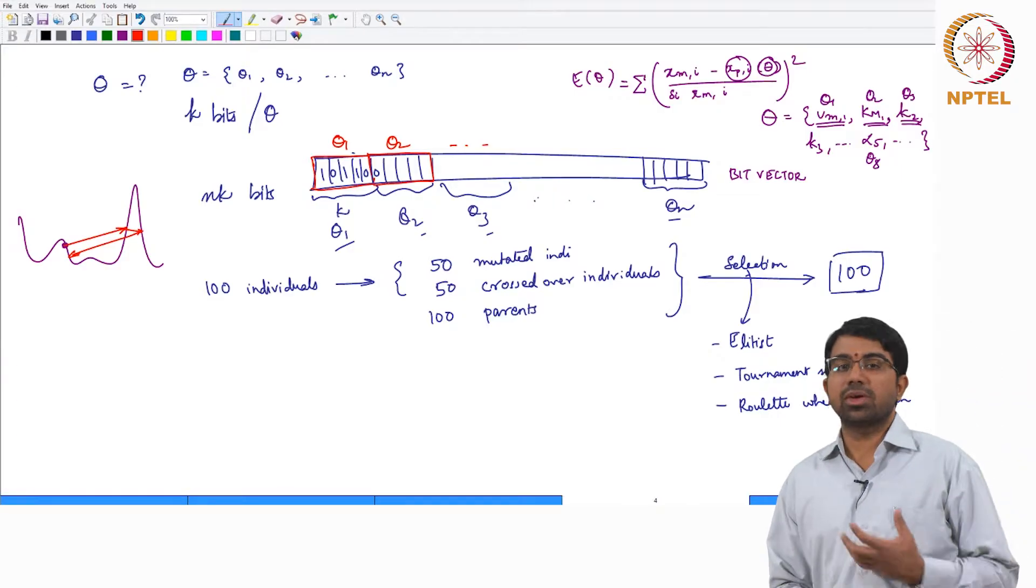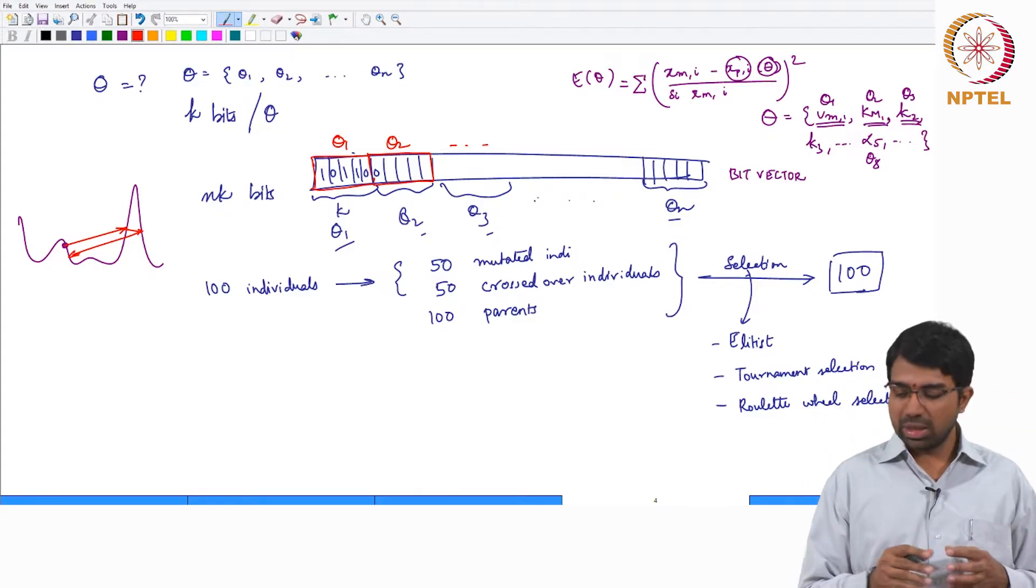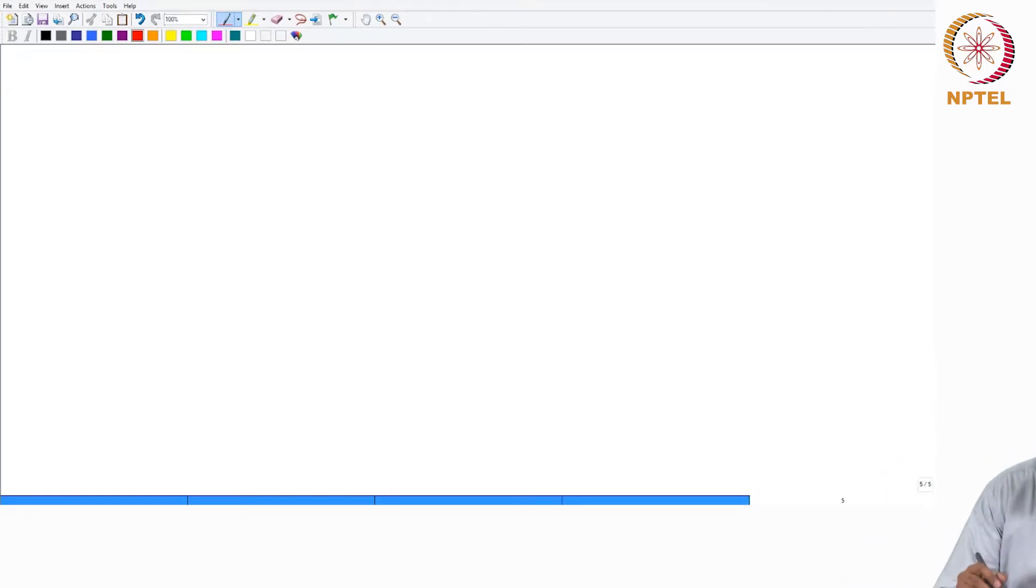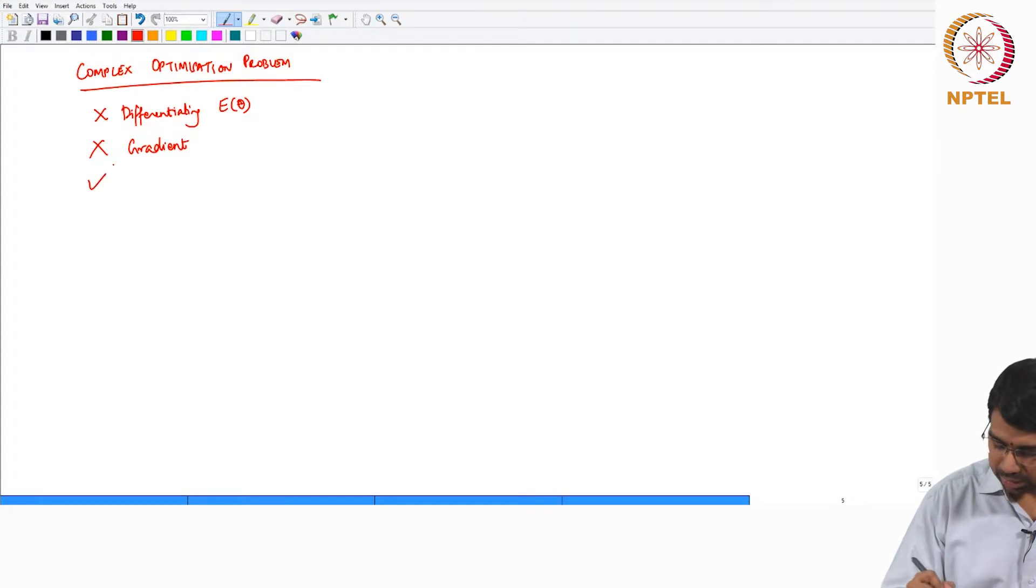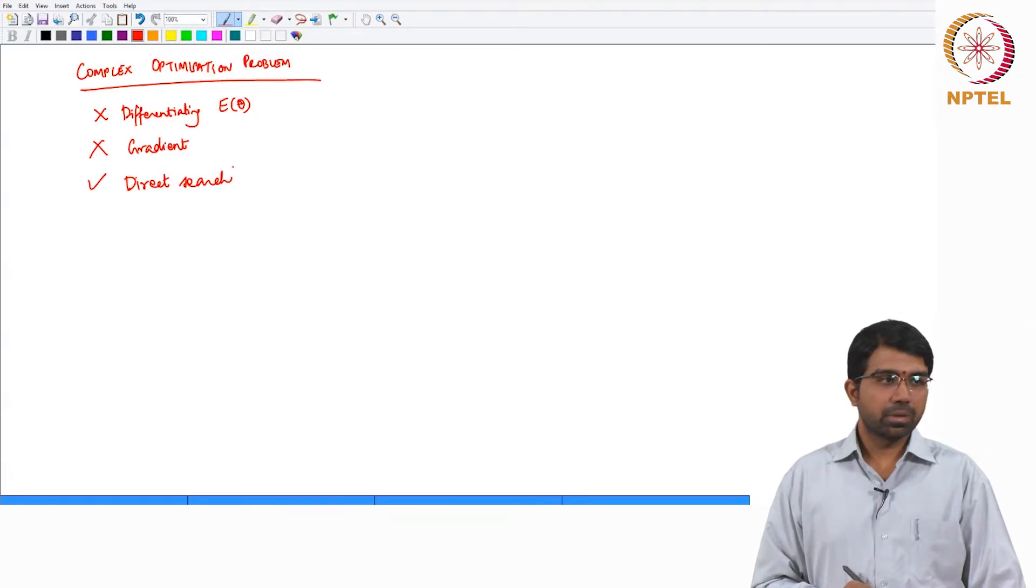Let us pause and take a look at what are the other domains where genetic algorithms are used. Genetic algorithms can be used in any domain where you have a somewhat difficult complex optimization problem where you have given up on differentiating the cost function or given up on gradient and are relying on direct search alone.